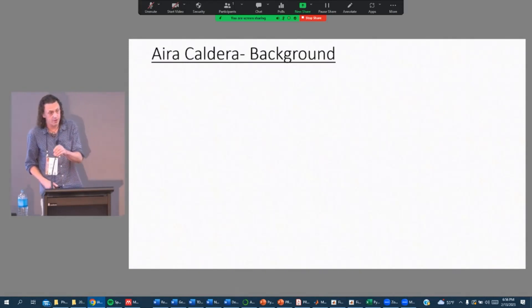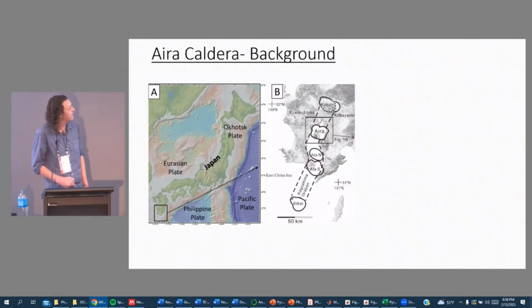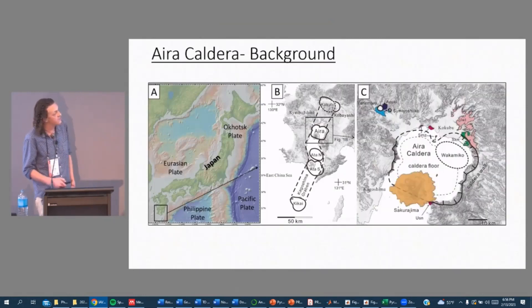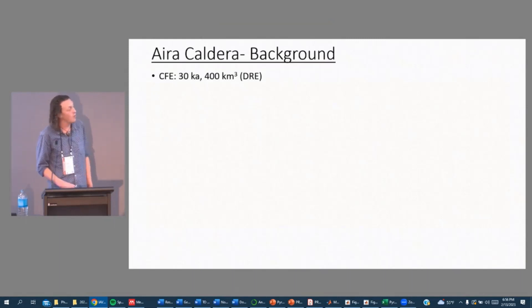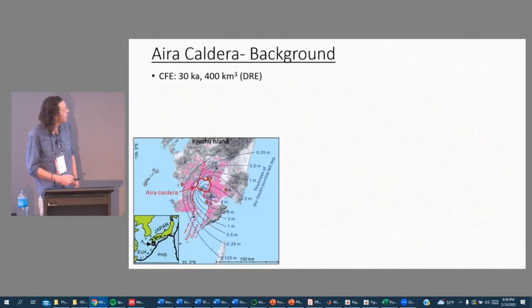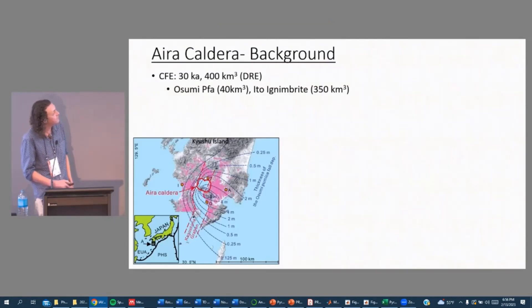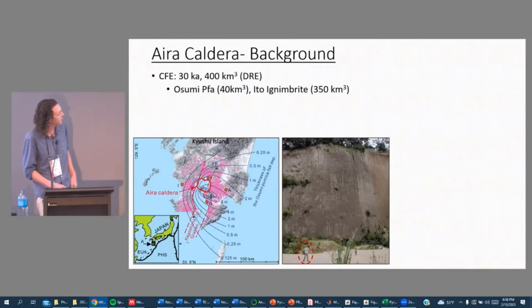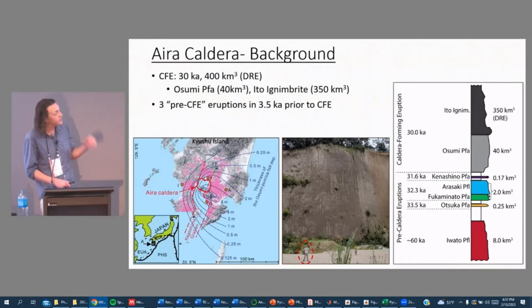But first, a little bit of background for Aira Caldera. So it is located in southern Japan on the southern island of Kyushu. It's located within the Kagoshima Graben along with some other calderas there. It's about 15 kilometers in diameter and now hosts Sakurajima, which is one of the most active volcanoes on Earth. The caldera forming eruption occurred about 30,000 years ago and erupted 400 cubic kilometers of magma dense rock equivalent. The Osumi pumice fall deposit was 40 cubic kilometers, followed by the Ito ignimbrite which can be quite thick.